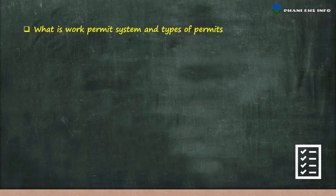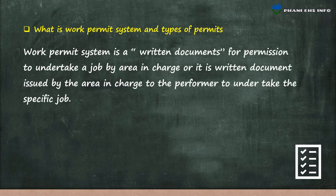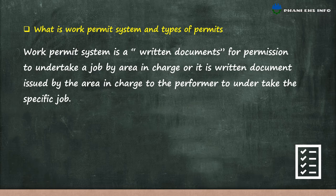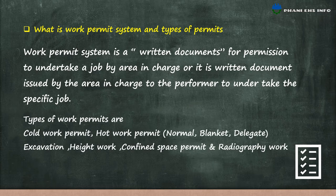What is a work permit system? A work permit system is a written document for permission to undertake a job, issued by the area in charge to the performer for a specific job. Types of work permits are: cold work permit; hot work permit, which is divided into normal, blanket, and delegate work permit; excavation; height work; confined space; and radiography work permits.